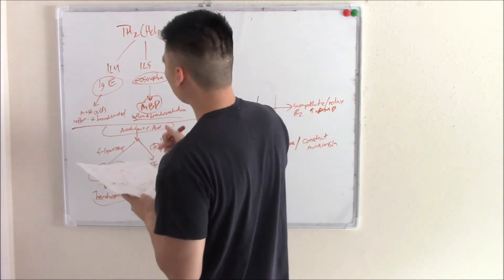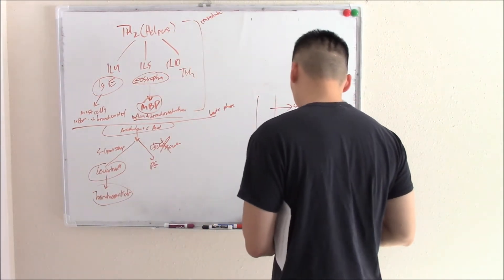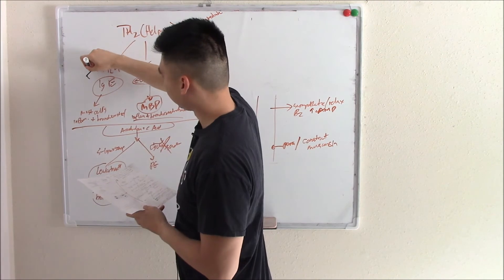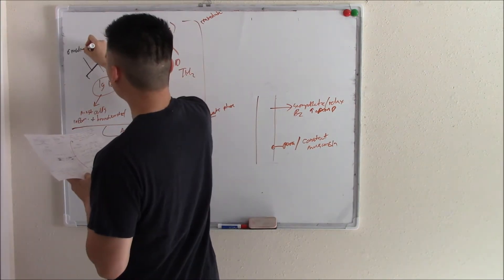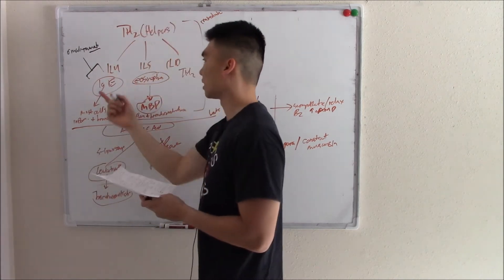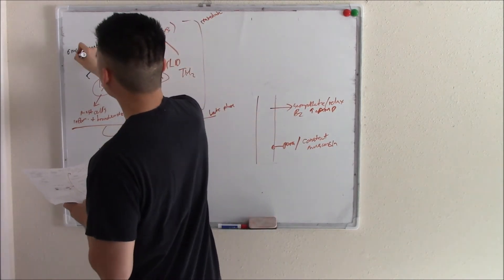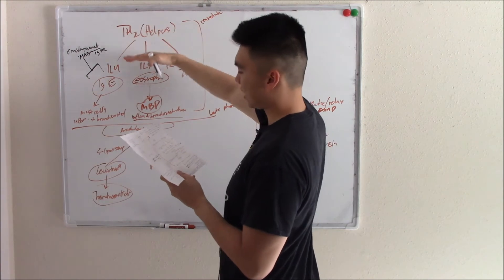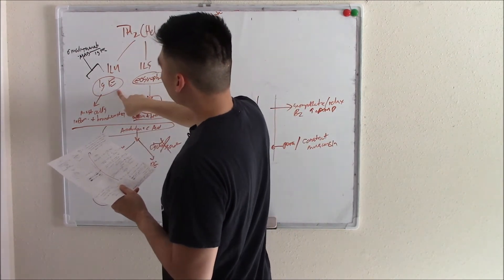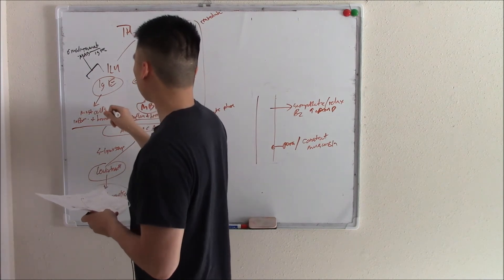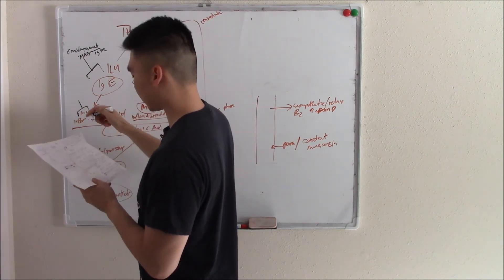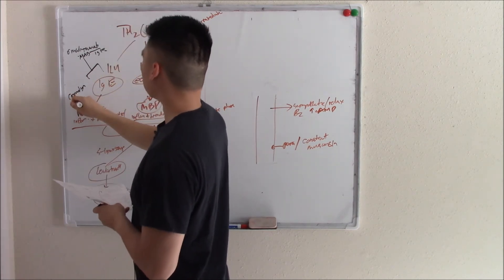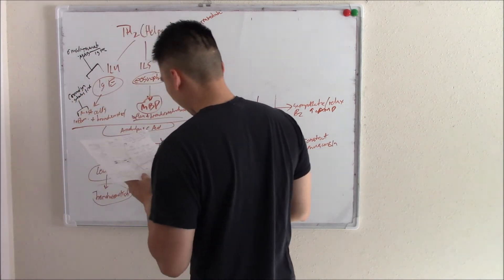First, we can block IgE with omalizumab — a monoclonal antibody against IgE. Next, if we can't block IgE, IgE will work on mast cells, so we can try to stop mast cells from degranulating. We can stabilize mast cells with something called cromolyn.